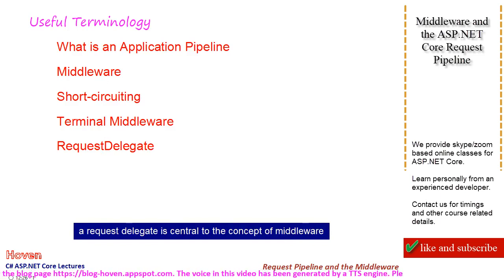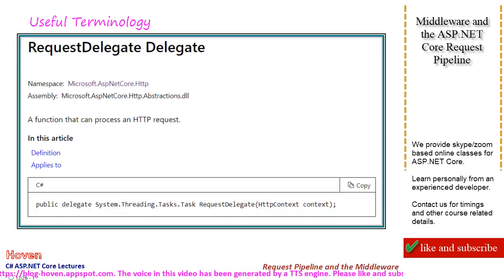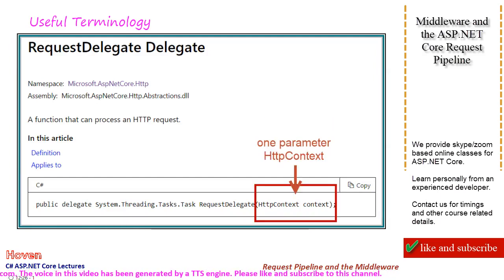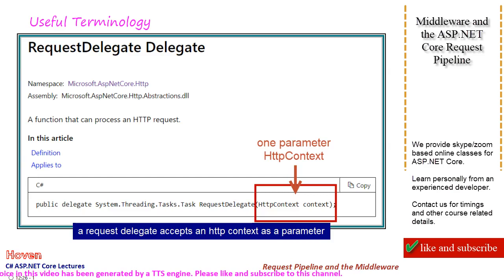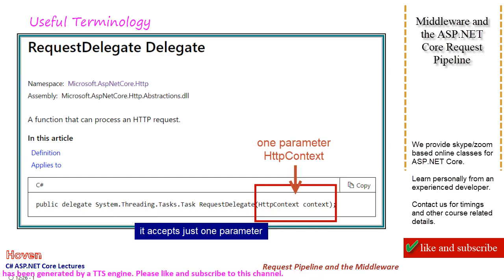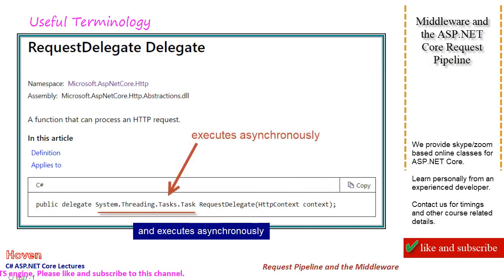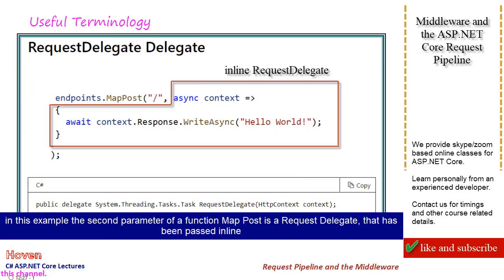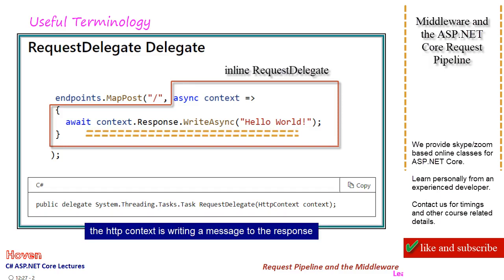A request delegate is central to the concept of middleware. This is an extract from the MSDN documentation. A request delegate accepts an HTTP context as a parameter. It accepts just one parameter and executes asynchronously. It uses the HTTP context to process a request. In this example, the second parameter of a function MapPost is a request delegate that has been passed inline. The HTTP context is writing a message to the response.